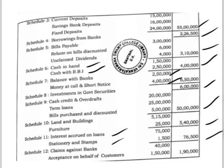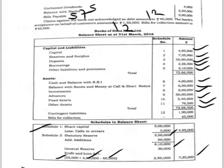Below the balance sheet totals, we write note number 12 for contingent liabilities: claims against the bank 40,000 plus acceptance on behalf of customers 1,50,000 equals 1,90,000, shown as a footnote. Bills for collection of 65,000 is shown as the next item after note number 12. This is how we prepare the balance sheet along with the relevant notes. We'll see the next question in the next video. Thank you for watching.